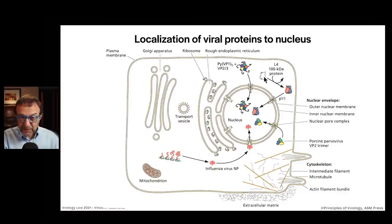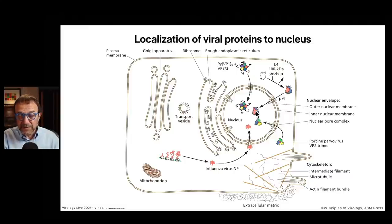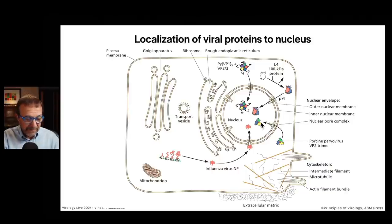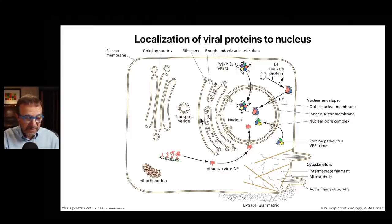For adenovirus, the L4 protein — eventually going to become a hexon — is translated in the cytoplasm, oligomerized, and then imported into the nucleus to participate in assembly. Parvovirus capsid protein is also made in the cytosol and imported. And influenza virus nuclear protein — remember, influenza is an unusual RNA virus in that it reproduces in the nucleus. Most RNA viruses stay in the cytosol, but the nuclear protein needs to be in the nucleus and has a nuclear localization signal to mediate that.